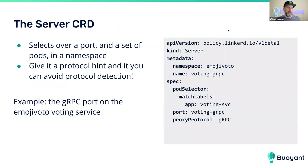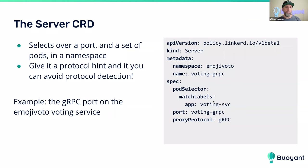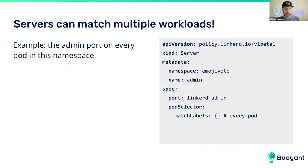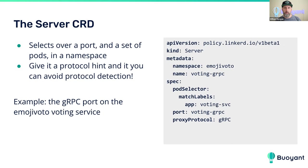Now let's talk about the two CRDs: Server and ServerAuthorization — these two work in conjunction. The Server CRD takes a port and a set of pods within a namespace. You give it a specific port, either by name or number, and a pod selector using label selectors. For example, here is a Server that corresponds to the gRPC port on the voting service of emoji vote — port 'voting-grpc', matching all pods with the app label matching 'voting-svc'. There's also an optional protocol hint that gives the proxy extra information and allows us to avoid protocol detection.